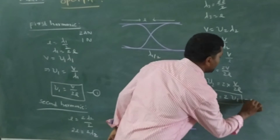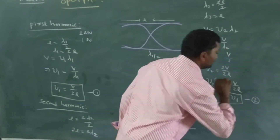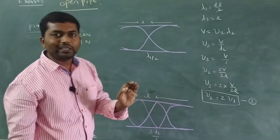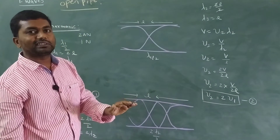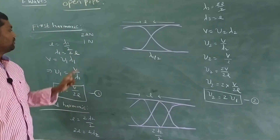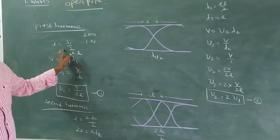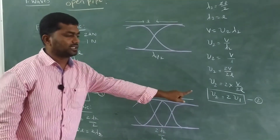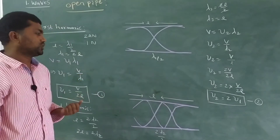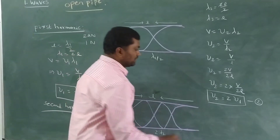This is equation number 2, called the 2nd harmonic. So equation 1 is the 1st harmonic (fundamental frequency) and equation 2 is the 2nd harmonic.